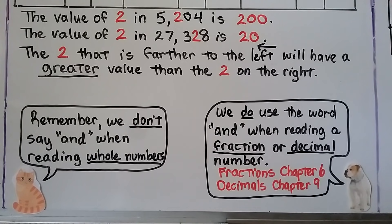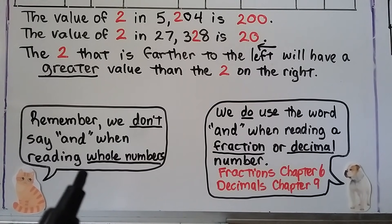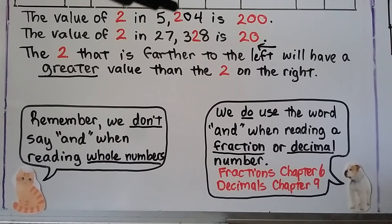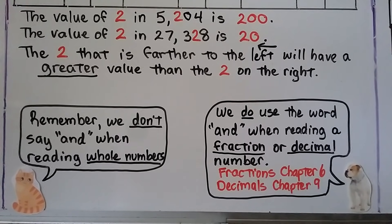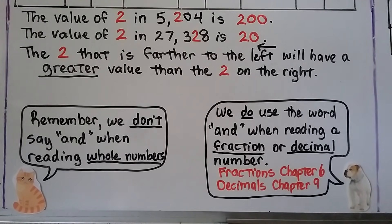Remember, we don't say 'and' when reading whole numbers. You wouldn't say '5,204 and' — we say '5,204.' We do use the word 'and' when reading a fraction or decimal number, and we'll talk about that more in chapter 6 and chapter 9.